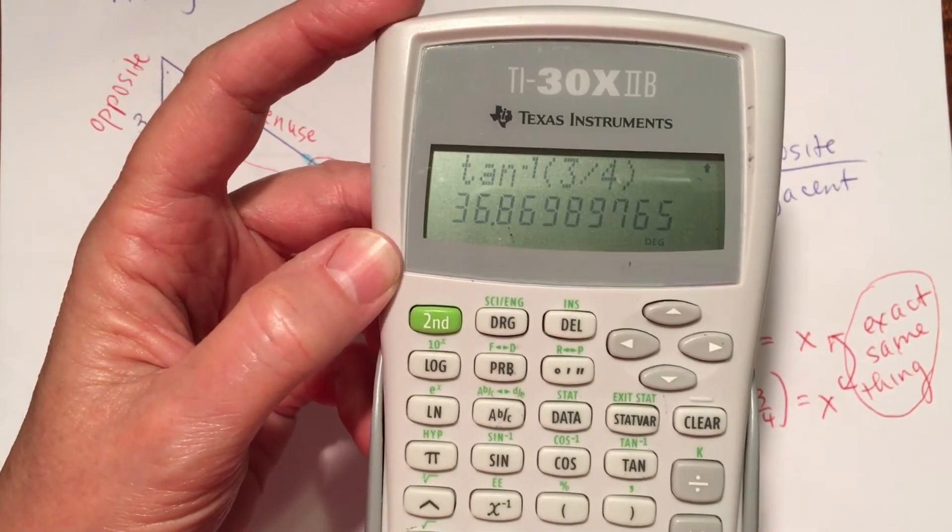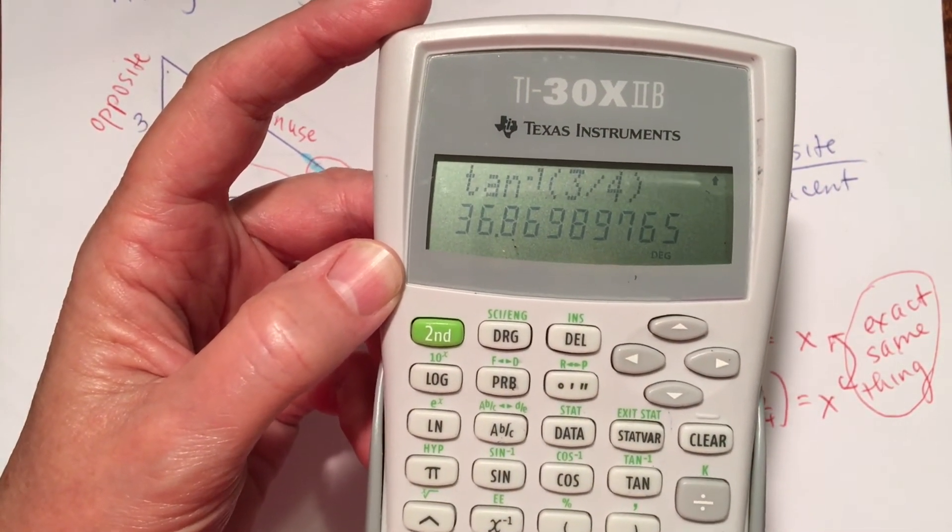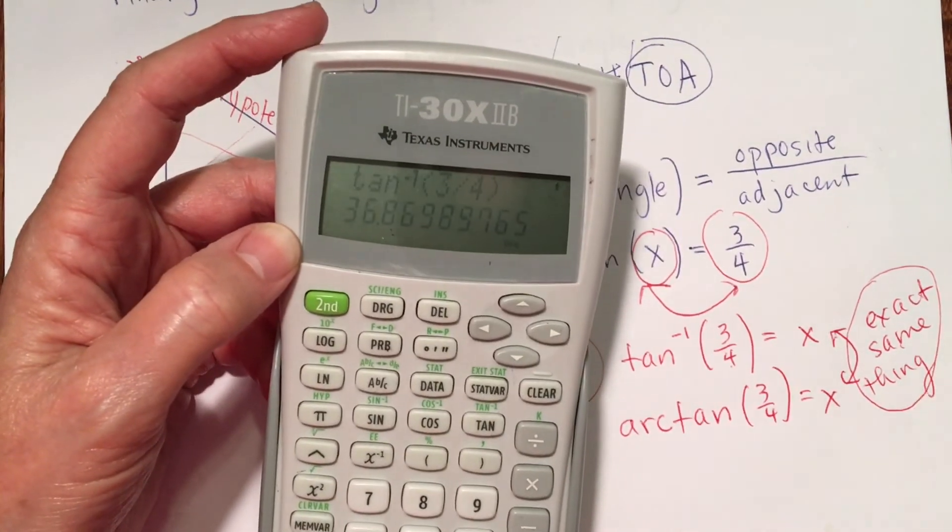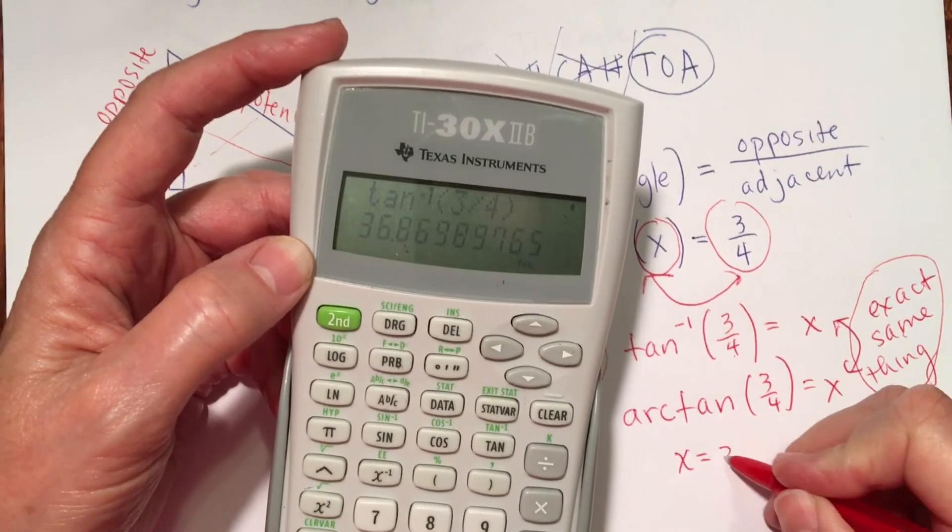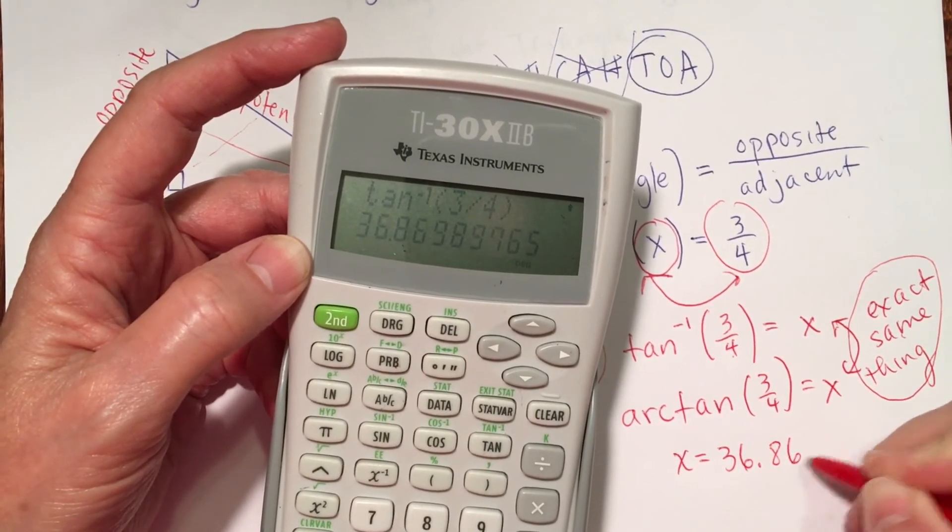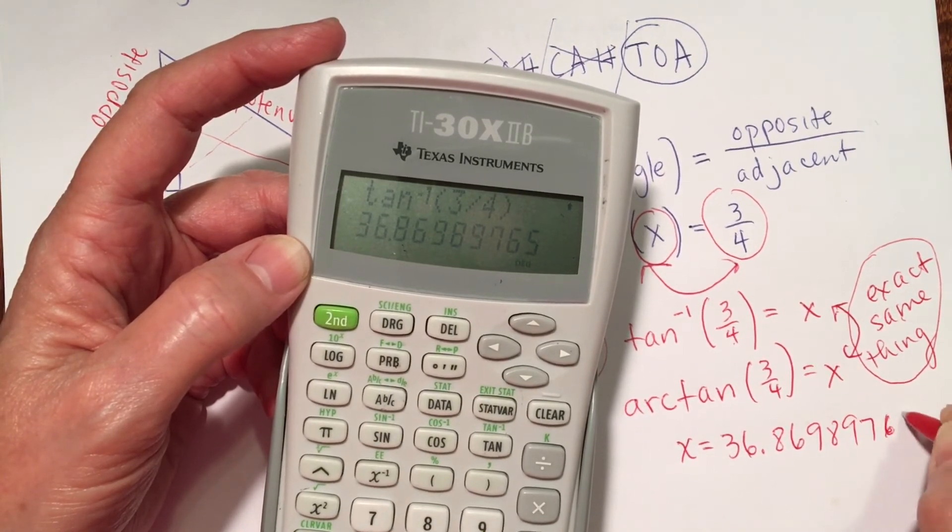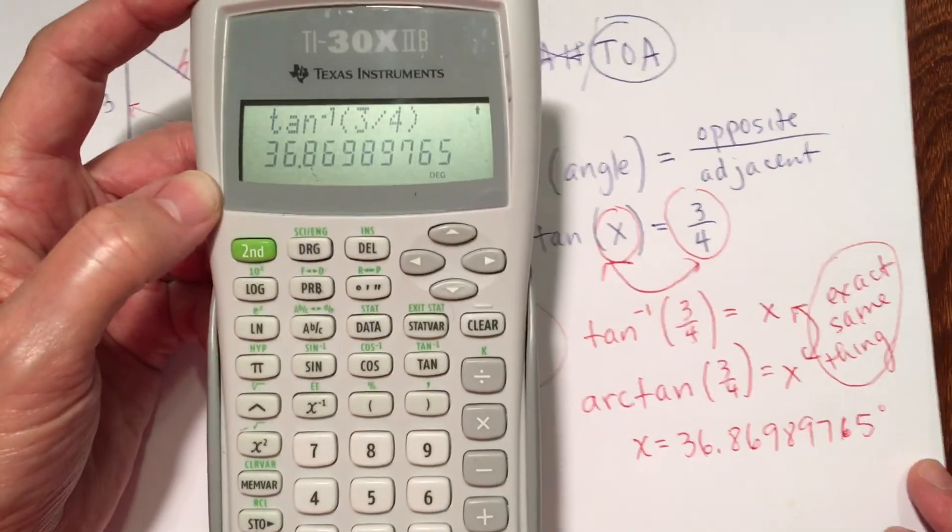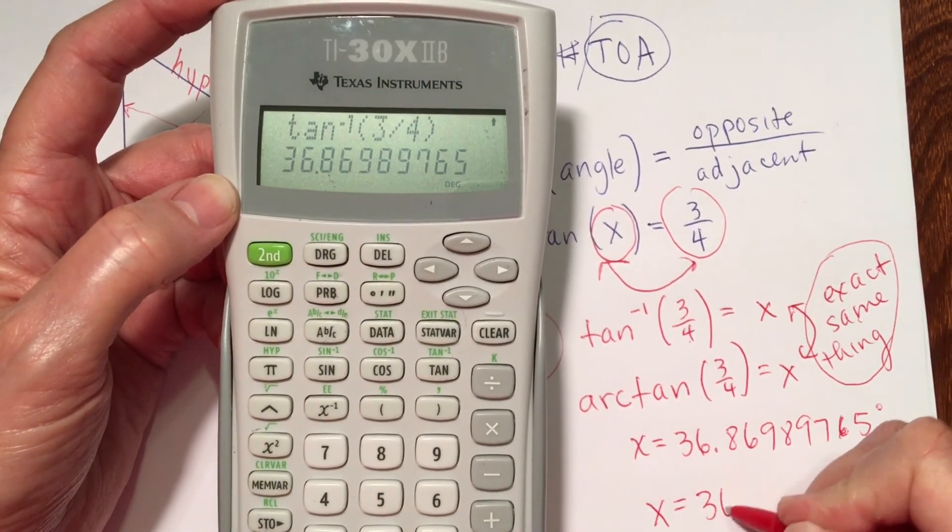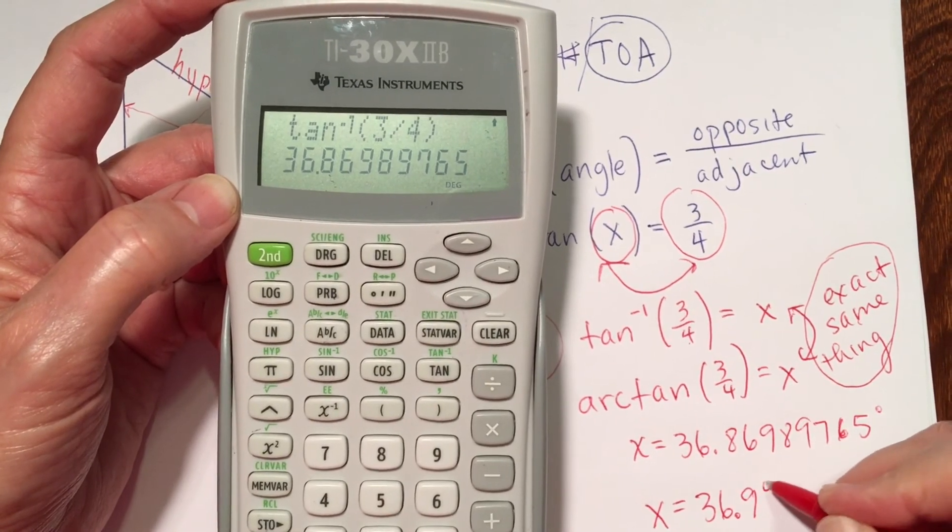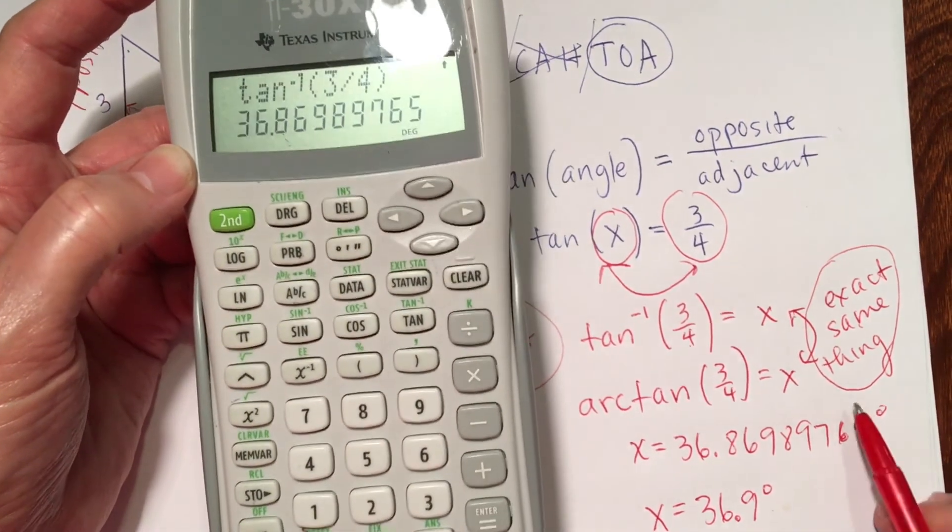And x is 36.86989765 degrees. I'm going to write that out. I'm going to go ahead and put the x on the left side. And x is 36.86989765 degrees. If you're going to round it to one decimal place, x is 36.9 degrees. Put the degree mark if you're measuring in degrees.